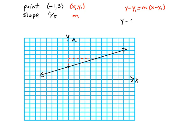So I'm just going to plug these into the equation. Y minus 3 is equal to 2 fifths times X minus a minus 1, or X plus 1.